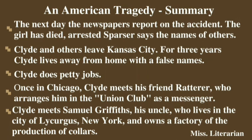For three years, Clyde spends his time away from Kansas City, living under a false name and performing small jobs for very little pay. One day, he happens to meet his friend Ratterer in Chicago, who was also in the Packard during the incident three years earlier. Upon their conversation, Ratterer arranges a position for Clyde at a union club as a messenger, and Clyde is quite happy with his new life.